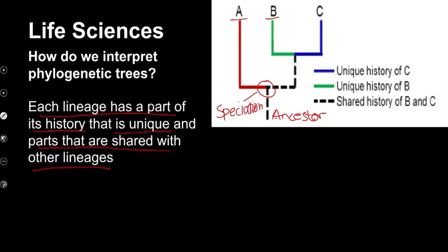Looking at this daughter lineage, we see that there's another speciation event that took place. So now we don't only have species A and B, but we also have species C. Let's have a look at what is unique to each, and what is shared history.